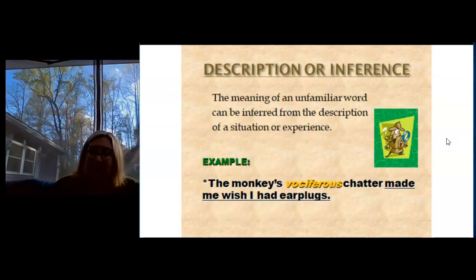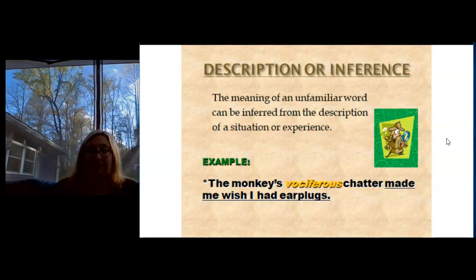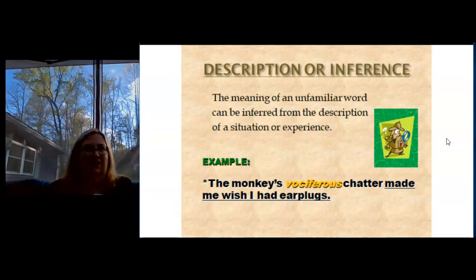Another thing an author can do is give you a description of a situation or an experience and let you apply what you know about that to help you infer the meaning of a word. Infer means you take your background knowledge and what you know from the text and make an educated guess about the word — you make an inference.